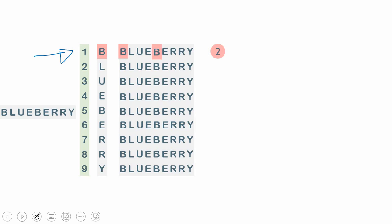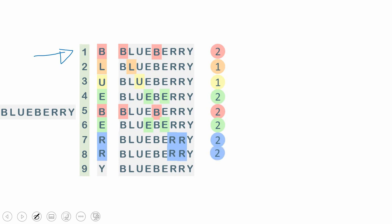The intention is to count character B in the given string and record that count. Similarly, in row number two there is character L — count how many L's are in 'blueberry': only one. Row three: character U, count is one. Row four: character E, two occurrences, so print 2. Row five: B again, two occurrences, print 2. Row six: E again, print 2. Row seven: R, two occurrences, print 2. Row eight: R again, print 2. Row nine: Y, one occurrence, print 1.